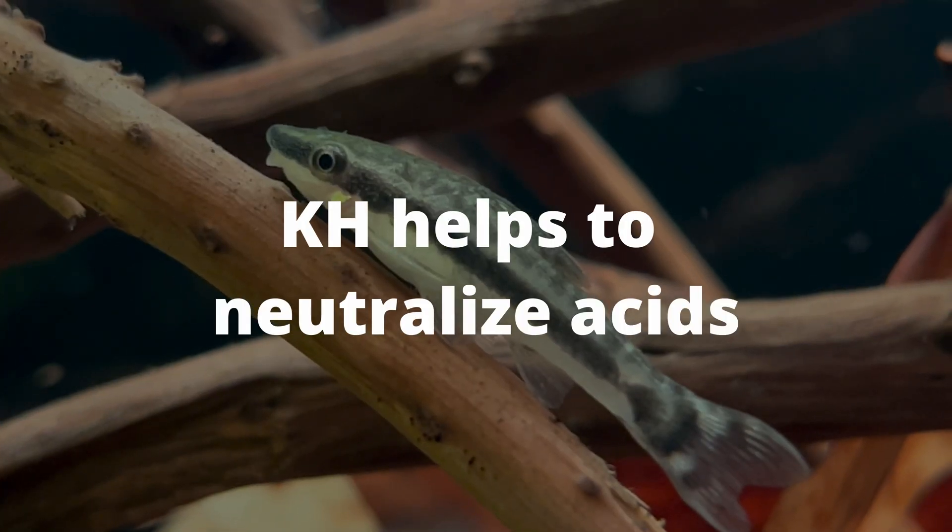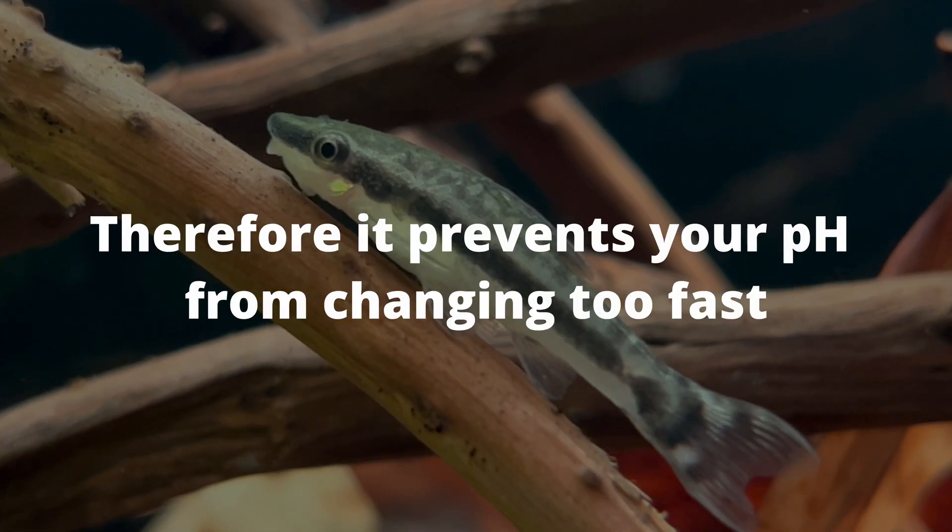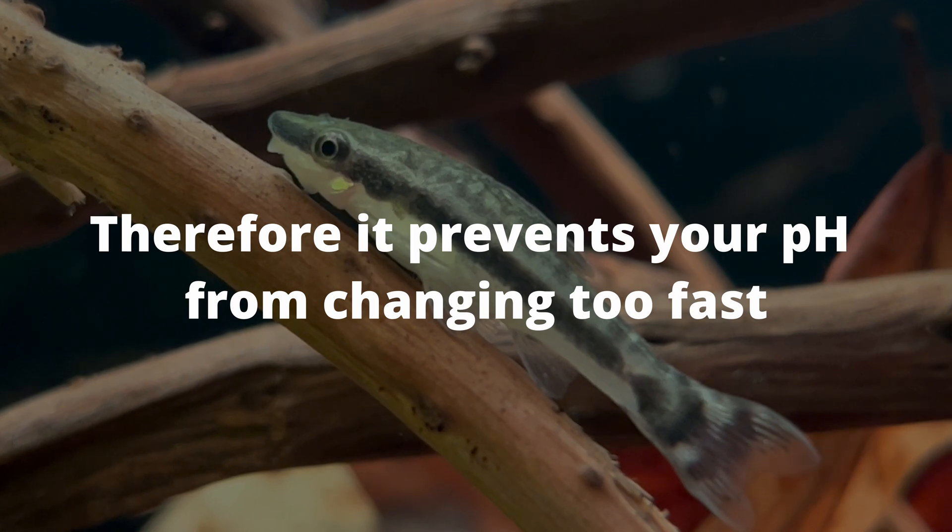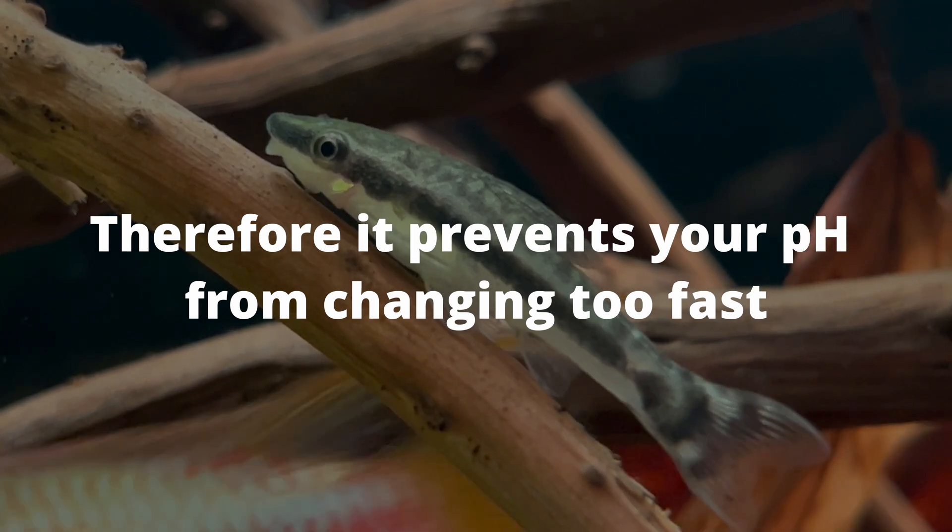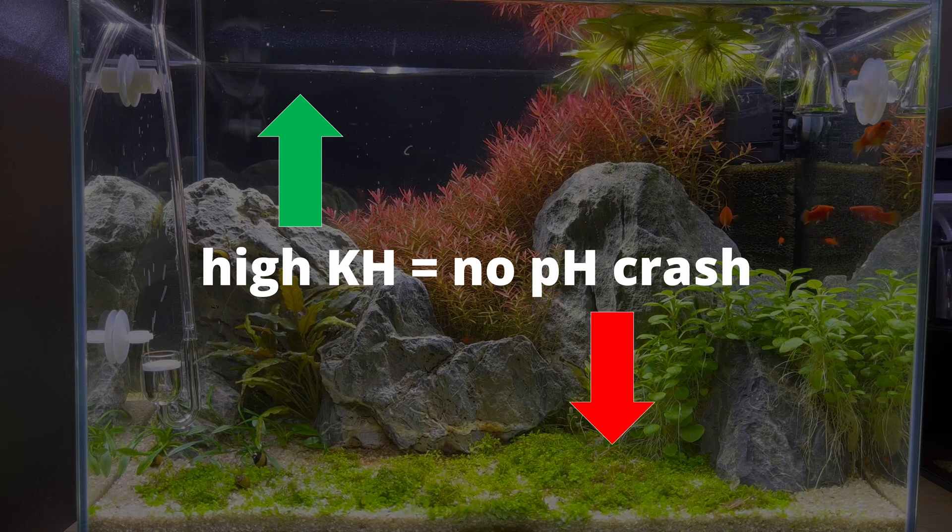So KH is able to neutralize acids that come into the water. Because it acts like a security system for our pH levels. So high KH makes the pH levels more stable.